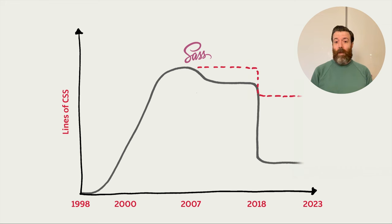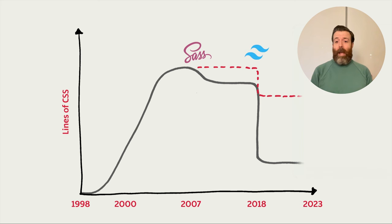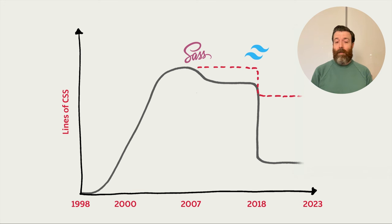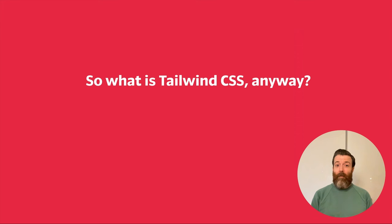Then the big change: 2018. A huge drop in the amount of lines of CSS I'm writing by hand, and a minor drop in the amount being sent to site visitors. How do we account for that? Tailwind. So what is it about Tailwind that gives us that huge drop in the amount I'm writing by hand, and a significant drop in how much CSS is being sent over the wire, reducing bandwidth consumed by sites?